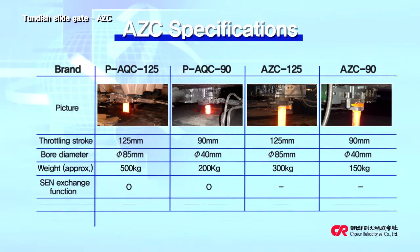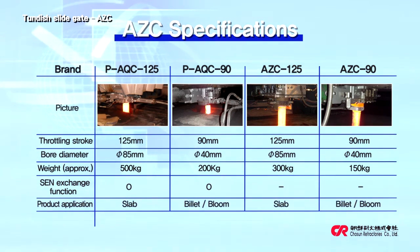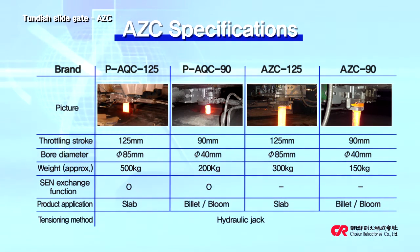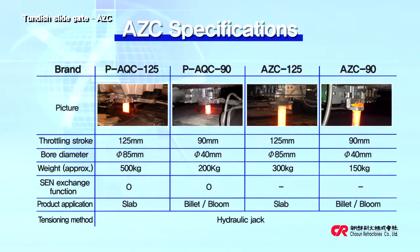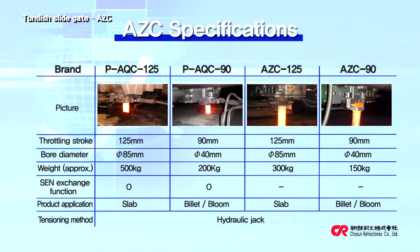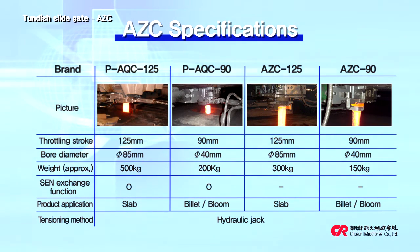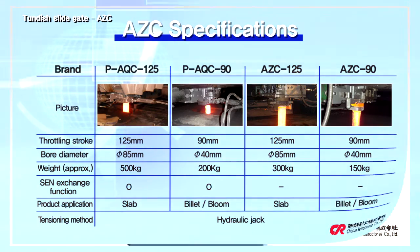PAQC-125 is a model for slab casters that allows for quick change of the SEN. PAQC-90 is a model for billet and bloom casters. The AZC-125 model can be used for slab casters with the SEN holder, and AZC-90 is another model applicable for billet and bloom casters.